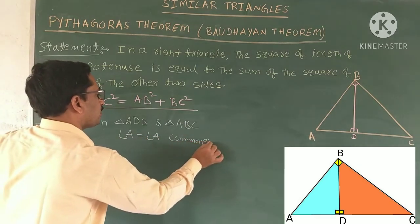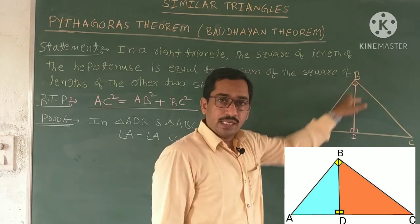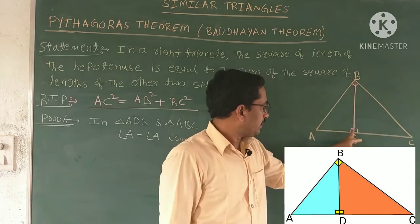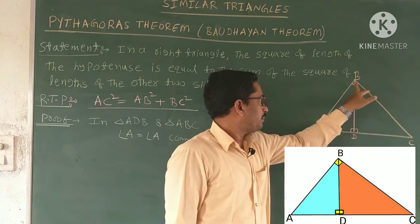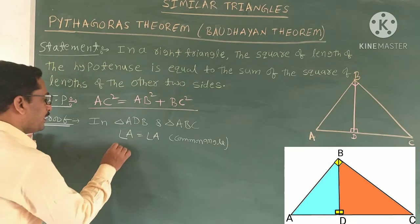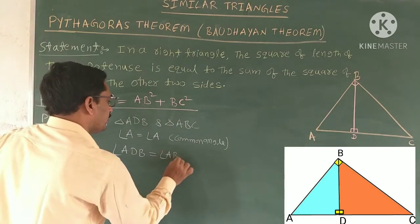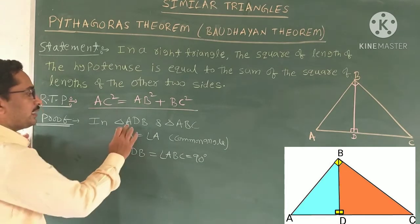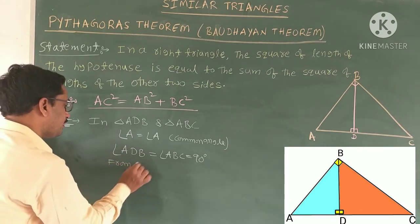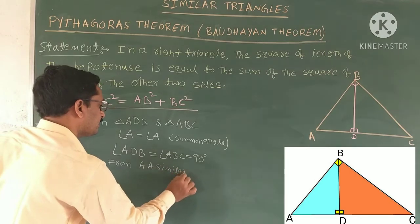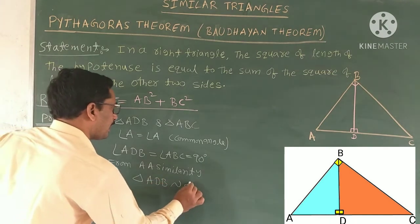From the figure, angle at D is 90 degrees because BD is perpendicular to AC. In triangle ABC, angle B is also 90 degrees. So angle ADB equals angle B, both equal to 90 degrees. Since two angles are equal in triangles ADB and ABC, by AA similarity, triangle ADB is similar to triangle ABC.